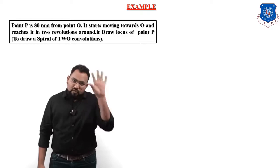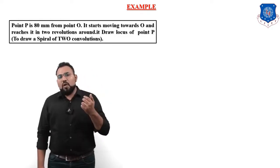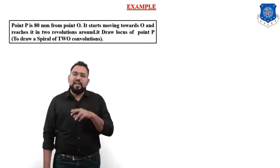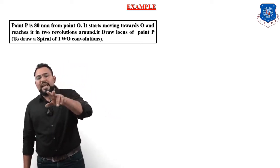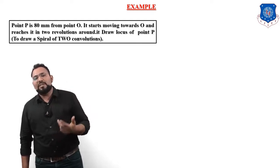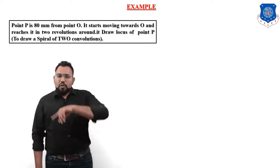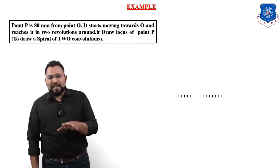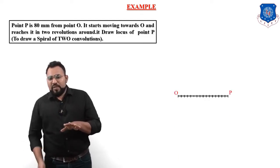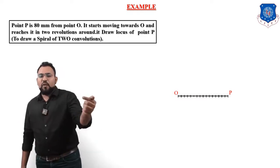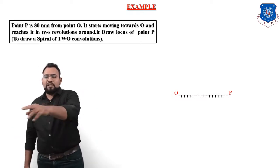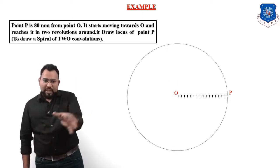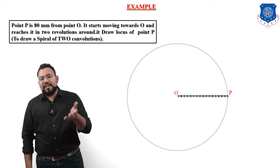First, we have to draw one circle. The radius of that circle equals the distance OP. Since point P is 80 mm from point O, the distance OP is 80 mm. So we draw a circle of 80 mm radius. You can see on your screen that we have first drawn the radius OP of length 80 mm and then drawn the circle.